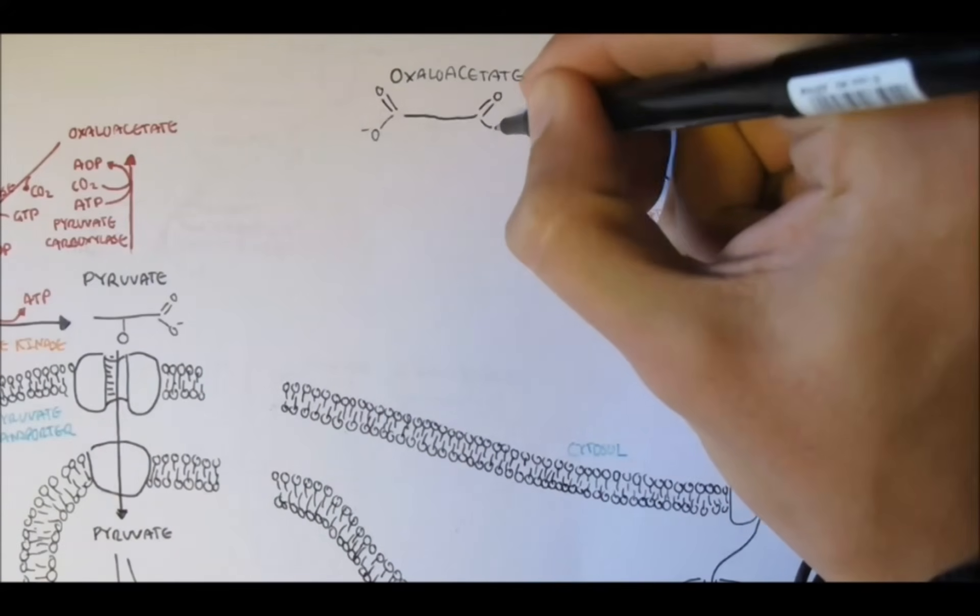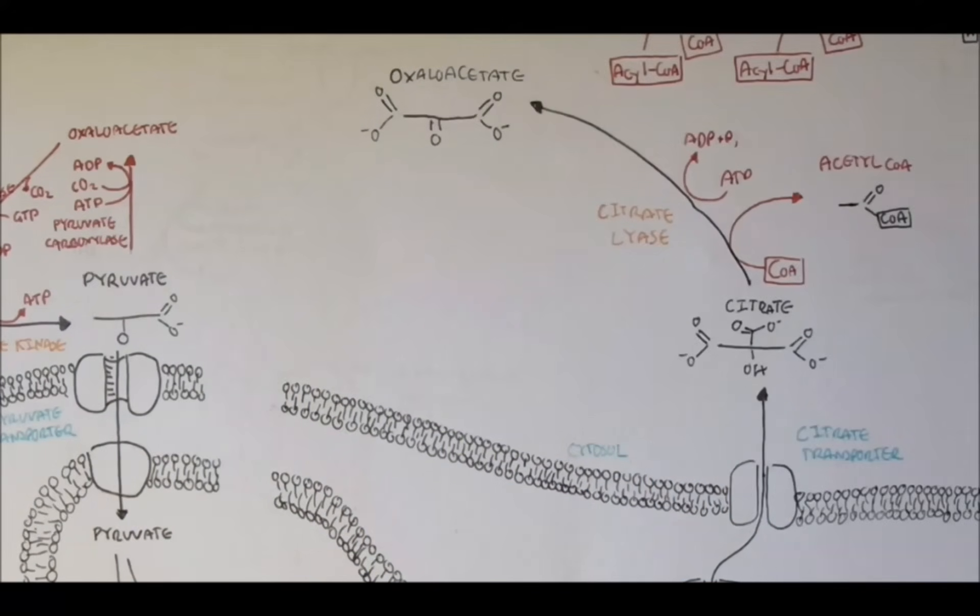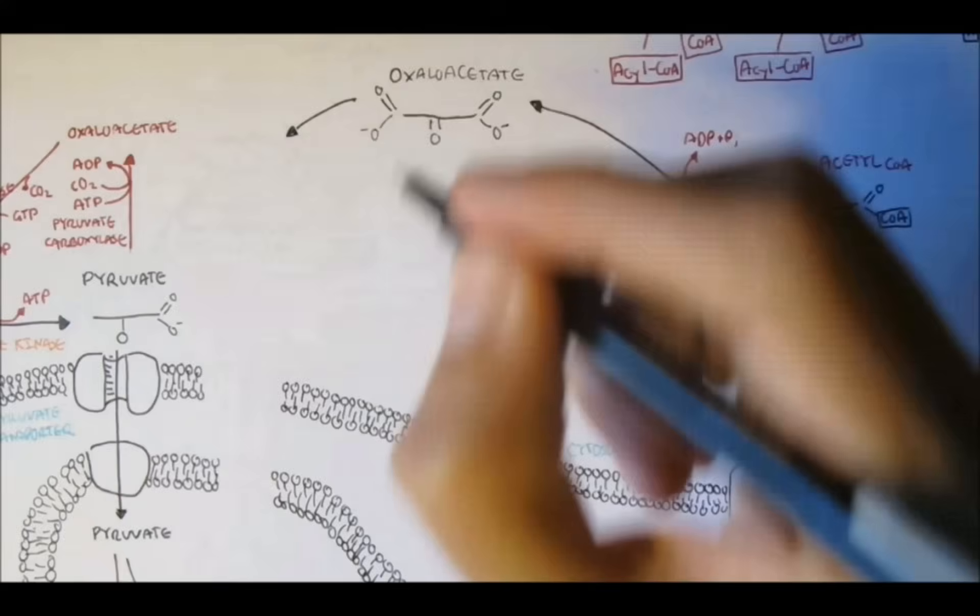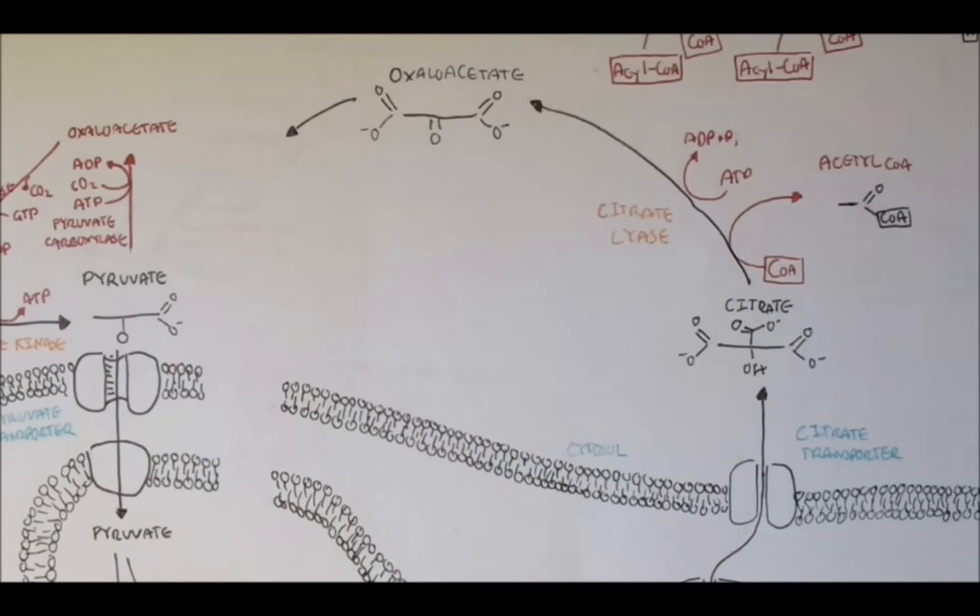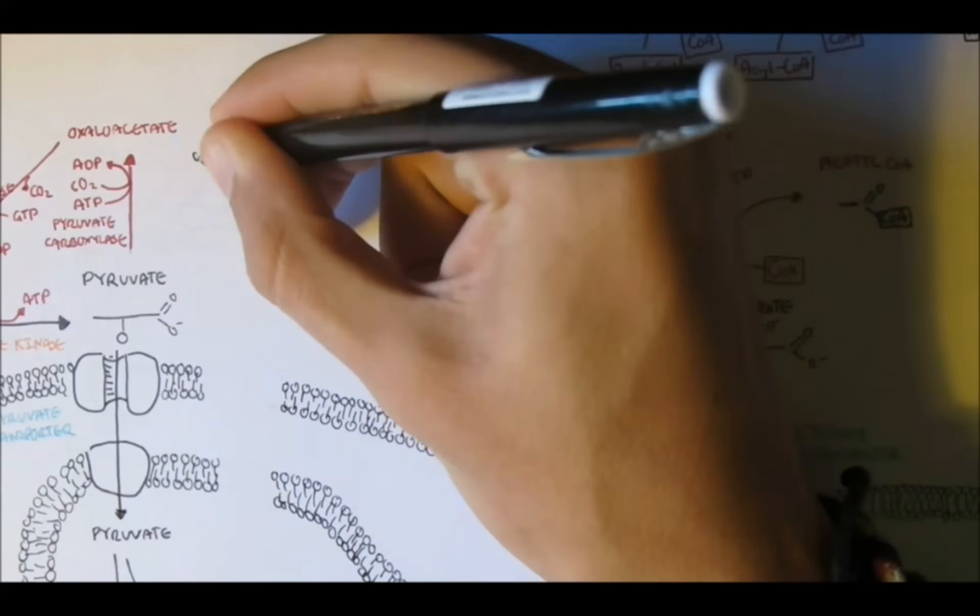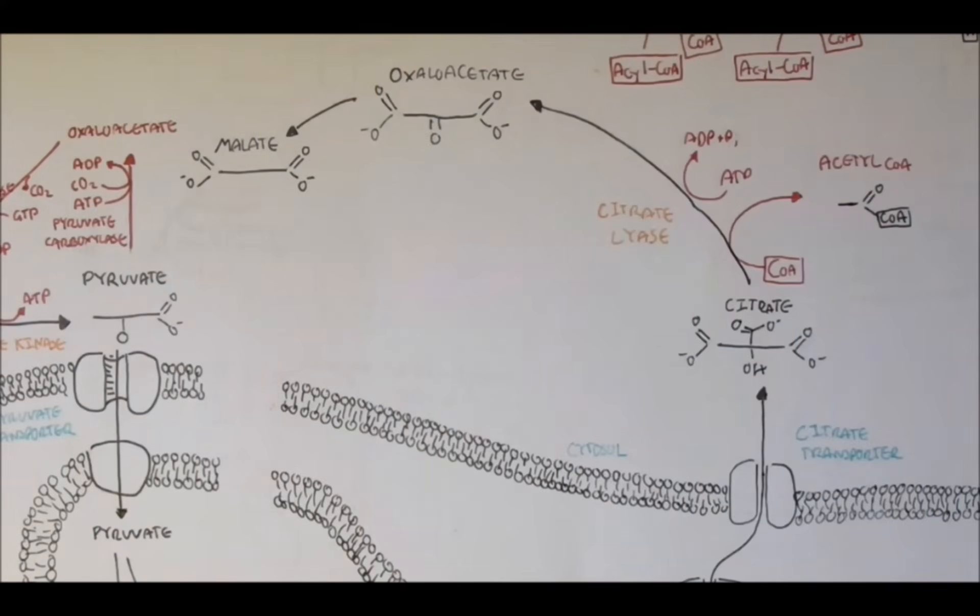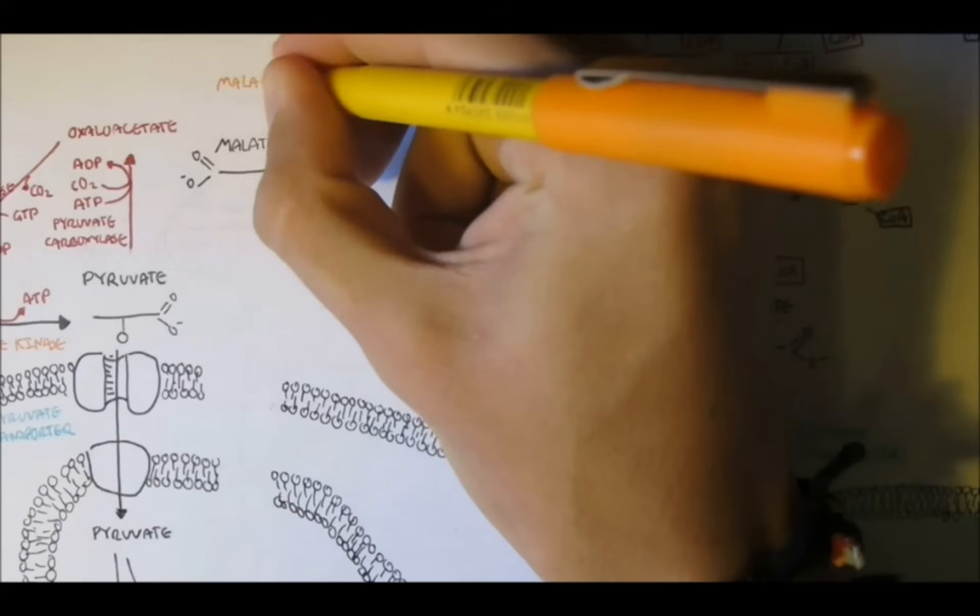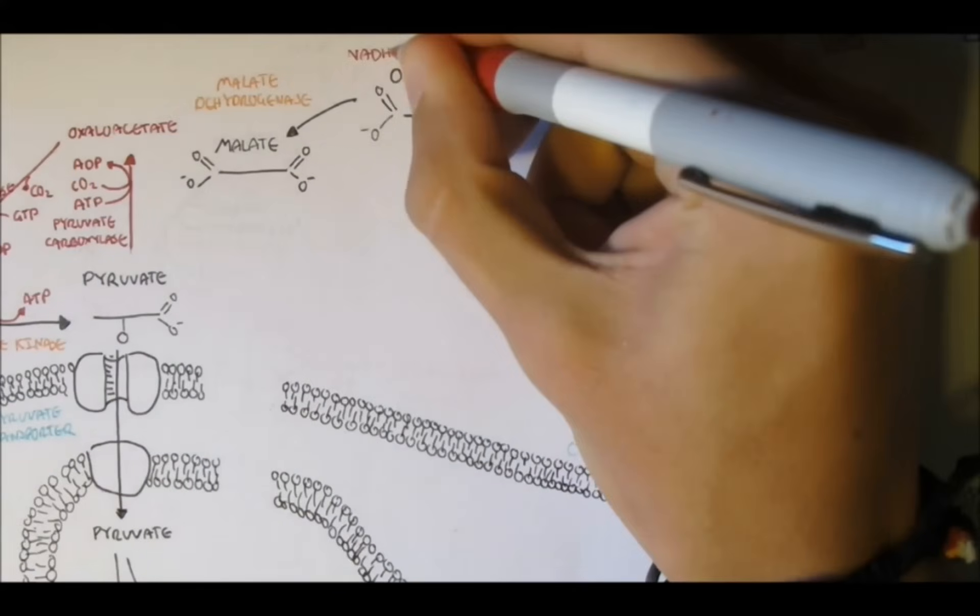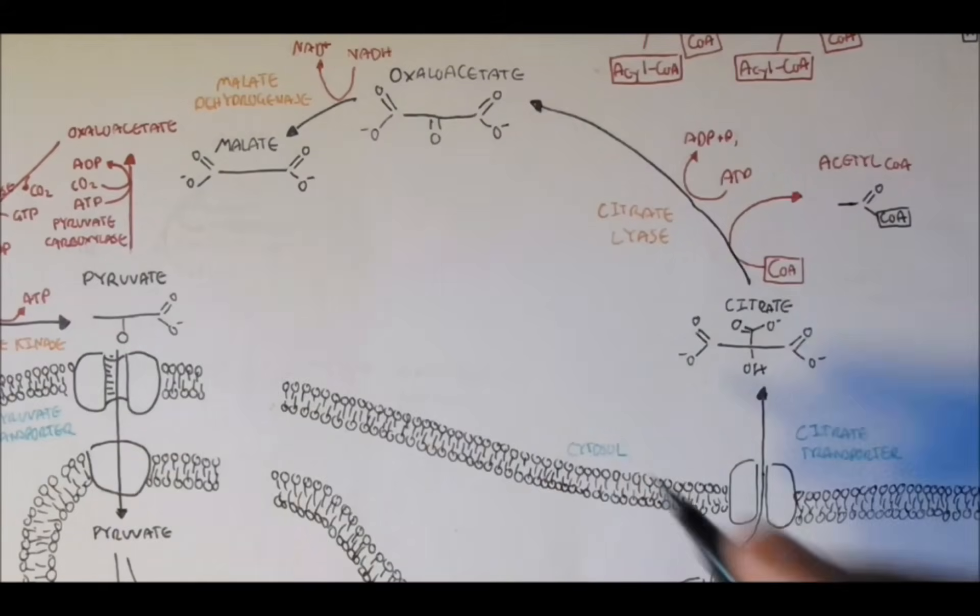But, continuing on though, there is alternative ways. So, back to oxaloacetate. Now, oxaloacetate can then be reduced to form malate by the enzyme malate dehydrogenase. So, if oxaloacetate is reduced, it means that NADH is oxidized.